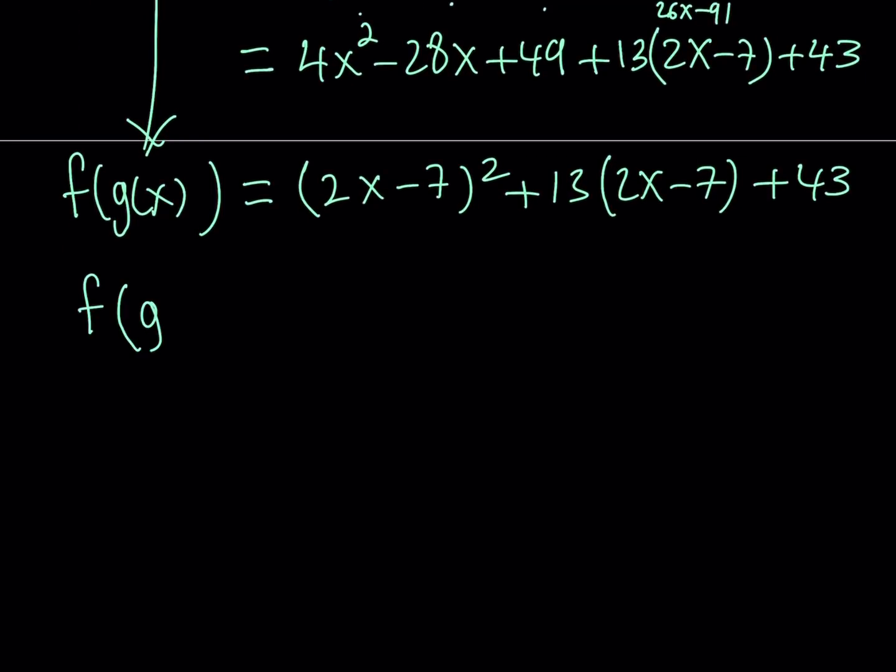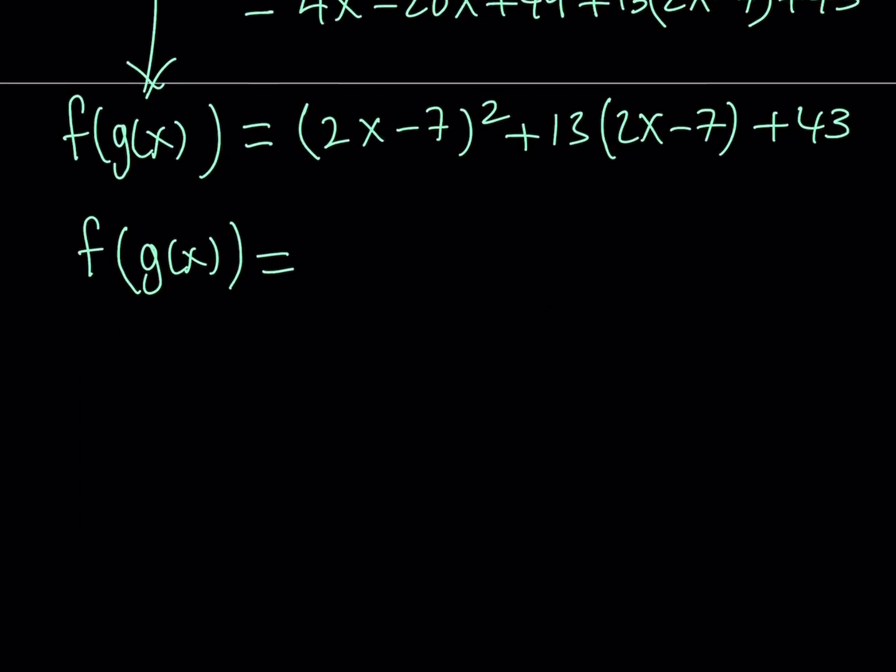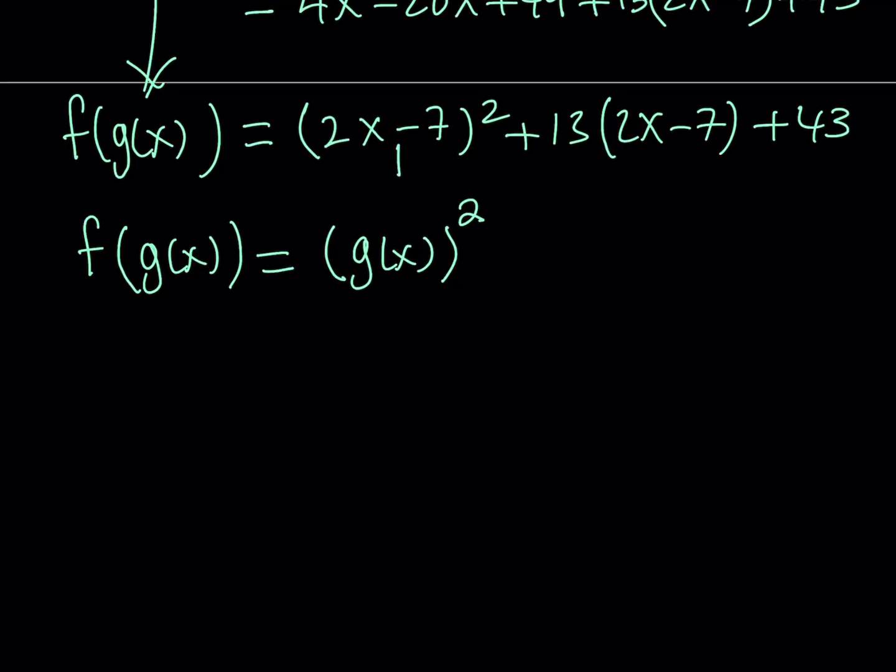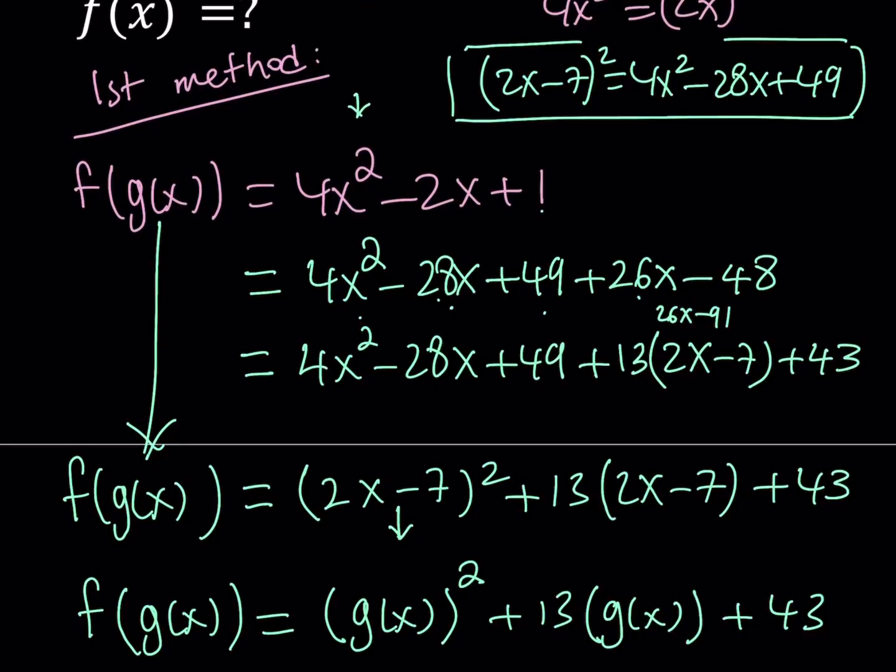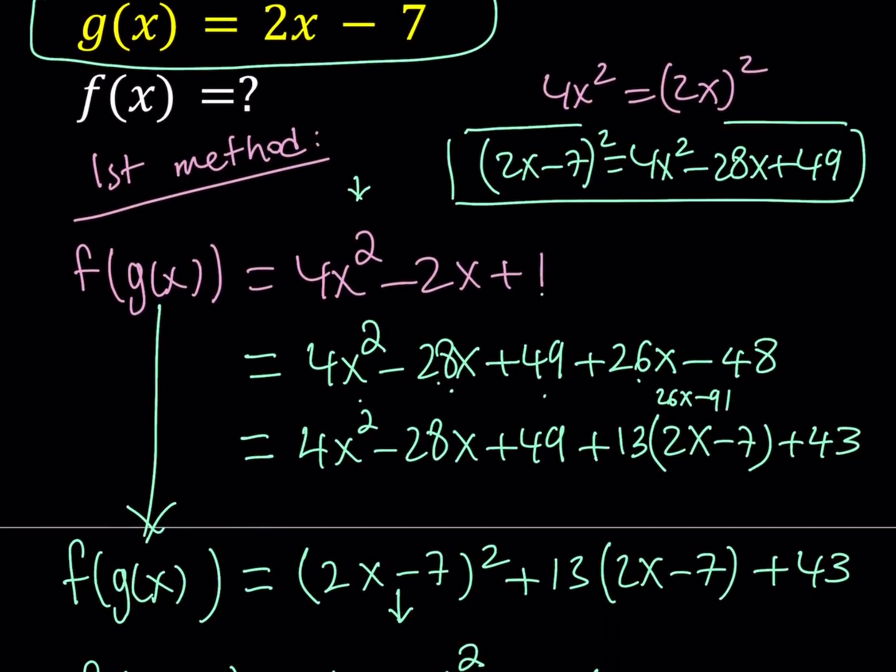So, now I'm going to replace 2x minus 7 with g of x. Awesome. So, now I'm going to get the following. And this is going to be real cool. When you do replace 2x minus 7 with g of x, you're going to get g of x squared plus 13 times g of x plus 43. Now, do you see what I see? Hopefully, you do. On the right-hand side, I have a function of g of x. And on the left-hand side, I have f of g of x, which is, again, a function of g of x. So, everything looks good. But remember, our end goal was to find f of x. So, how do you find f of x? Well, you replace g of x with x.